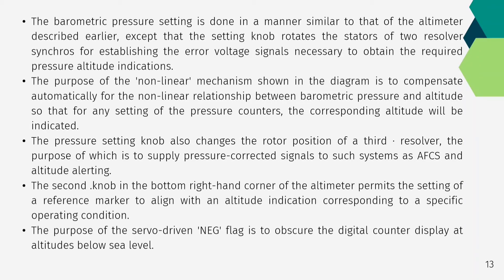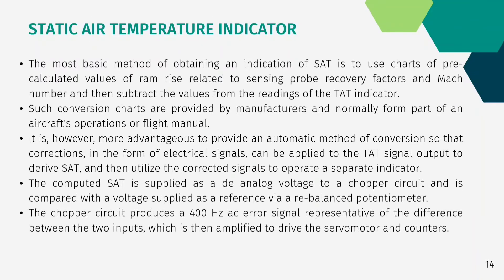The pressure setting knob also changes the rotor position of a third resolver, the purpose of which is to supply pressure-corrected signals to systems such as AFCS and altitude alerting. A second knob in the bottom right-hand corner of the altimeter permits the setting of a reference marker to align with an altitude indication corresponding to a specific operating condition. The servo-driven NEG flag serves to obscure the digital counter display at altitudes below sea level.